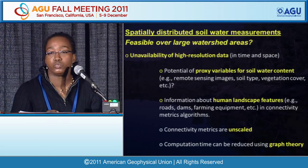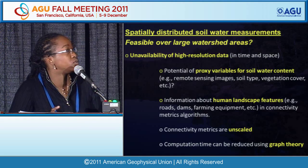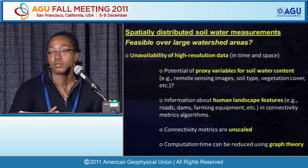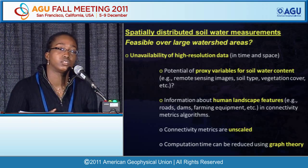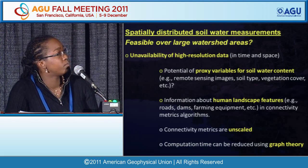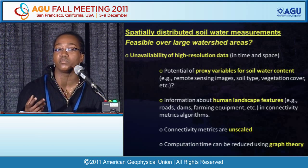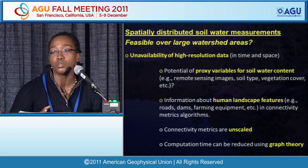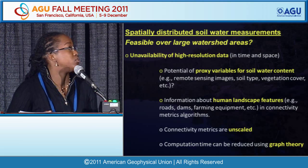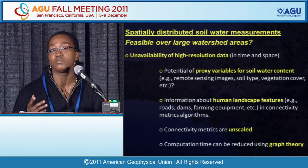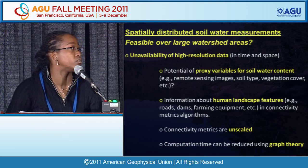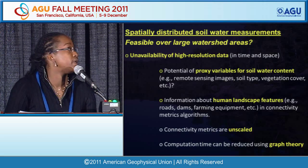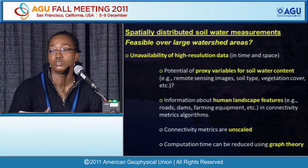The greatest downside of connectivity metrics is that high-resolution measurement networks are impossible to deploy over large areas, limiting their application to large inhabited and disturbed watersheds. However, maps of saturated areas or soil water content can be obtained via remote sensing images or proxy variables such as soil type and vegetation cover. A great advantage of connectivity metrics is that they are flexible enough to account for human landscape features such as roads, dams, or farming equipment that can either favor or impede flow connectivity. Connectivity metrics have also proven to be scale-independent, and computation times are being reduced.